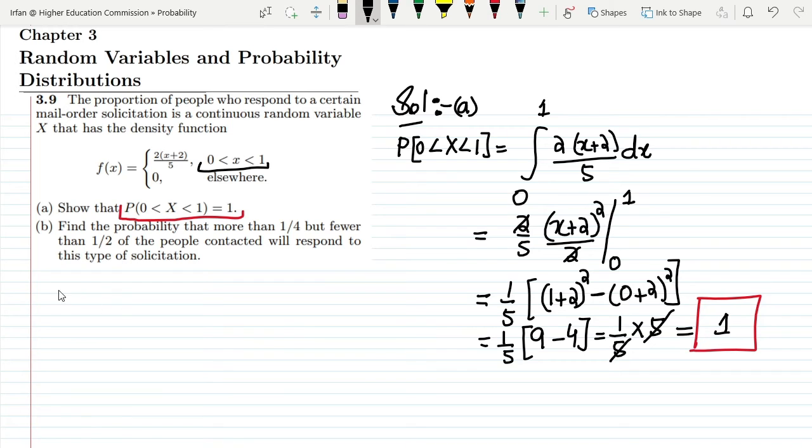Now moving towards part (b). Find the probability that more than 1/4 but fewer than 1/2 of the people contacted will respond to this type of solicitation.